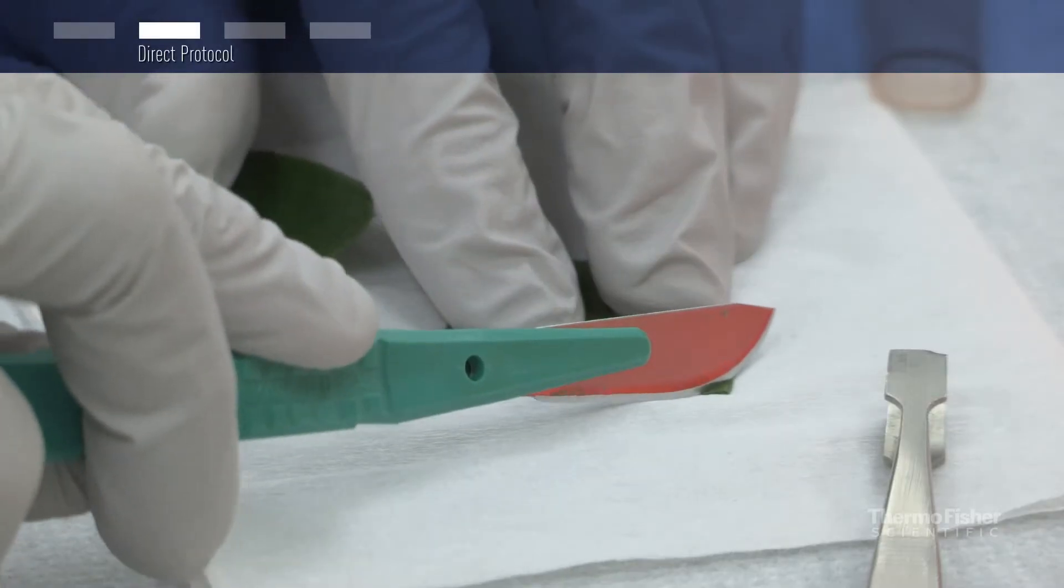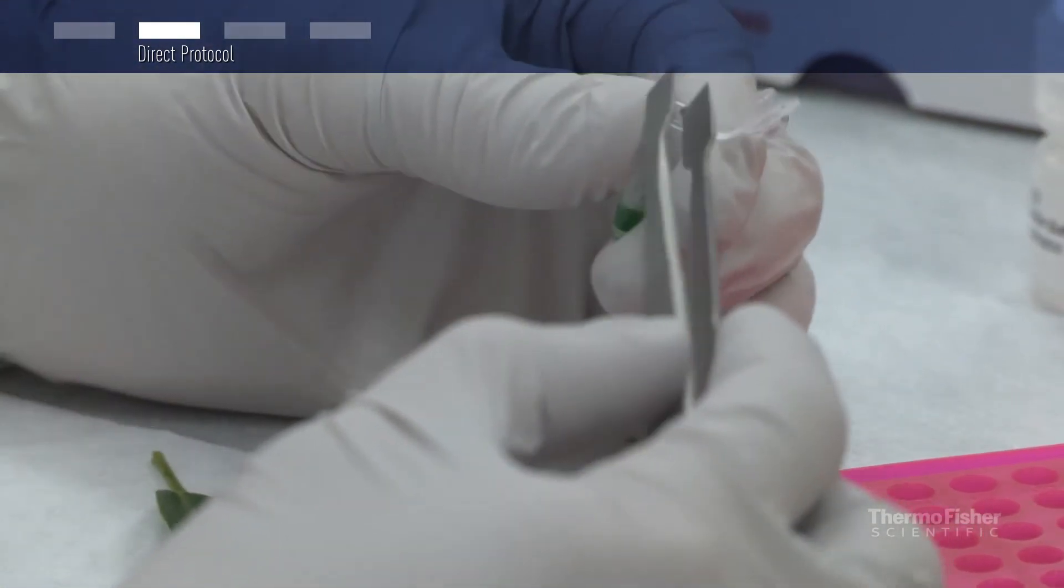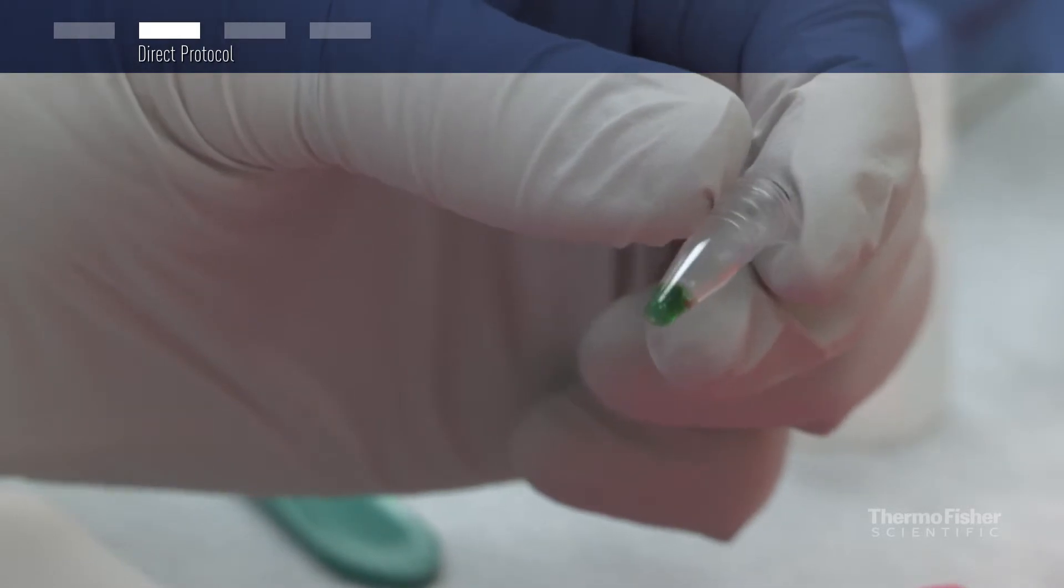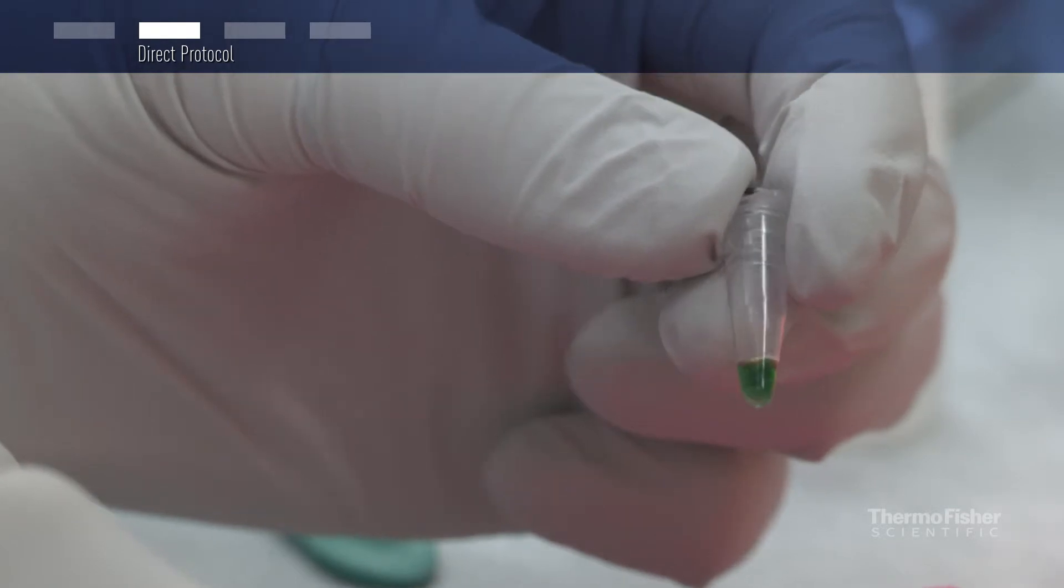For the direct protocol, a tiny amount of sample is added directly into the PCR reaction mix. The PCR reaction mix should be added to the reaction tube first, and the sample should then be added into the mix rather than onto the wall of the tube. This is in order to minimize DNA degradation.